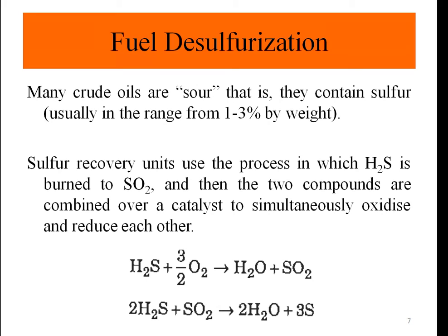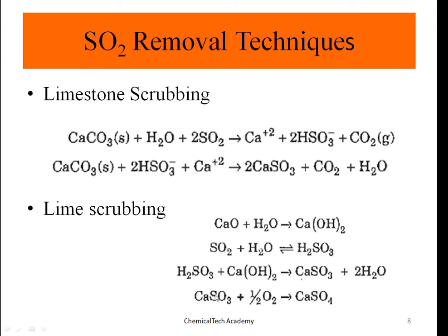Sulfur recovery units use a process in which H2S is burned to SO2, and then the two compounds are combined over a catalyst to simultaneously oxidize and reduce each other. The reactions are: H2S plus 3/2 O2 produces SO2 plus water, and H2S plus SO2 produces elemental sulfur and water.